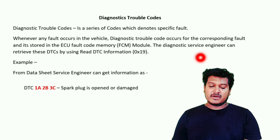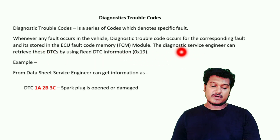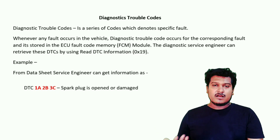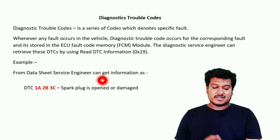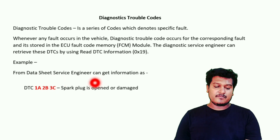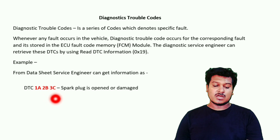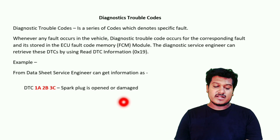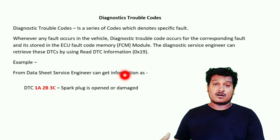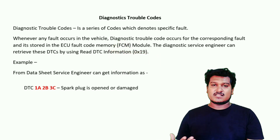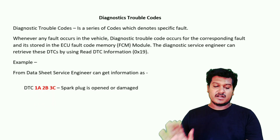The diagnostic service engineer retrieves these DTCs using Read DTC Information and reports them to the mechanic. The mechanical service technician would not otherwise know about these DTCs. The diagnostic service engineer takes the DTC, checks the data sheet, and compares it. For example, DTC 1A 2B 3C might indicate a spark plug is open or damaged, so the engineer tells the mechanic to check and fix the spark plug.